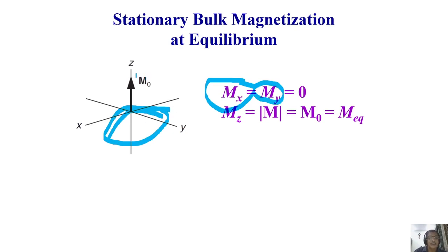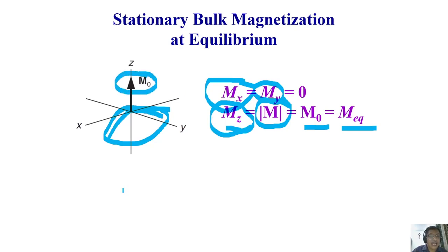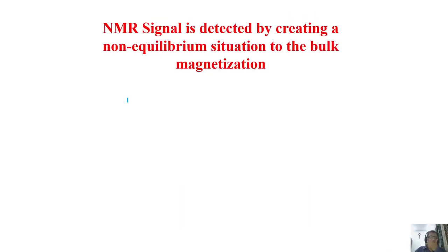Only M0 exists, and it is stationary, so it is also called Mz magnetization. All the nomenclatures — Mz, M0, Meq, or Meq — refer to the same thing in thermal equilibrium. One important point: at thermal equilibrium the bulk magnetization is static and perfectly aligned along the z-axis.